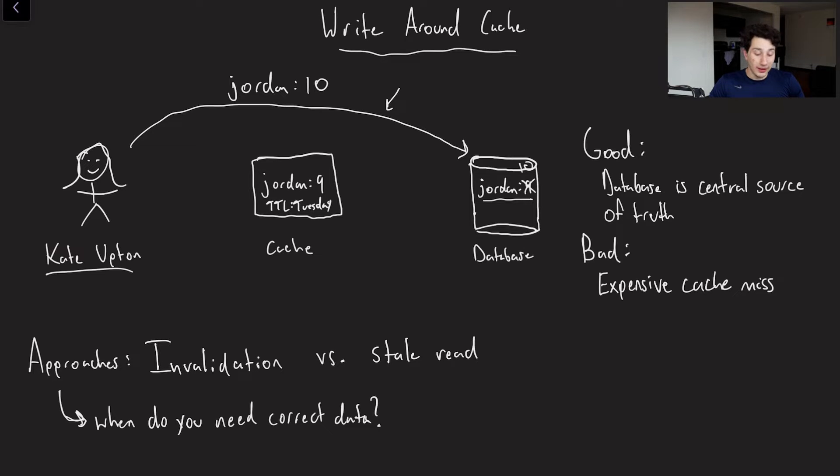However, now we're going to do a couple of extra things. And actually, effectively, we've got two options here. So one, I'm going to be calling invalidation, the other I'll call a stale read. So the stale read would be Kate Upton has written to the database. But then we don't really do anything.